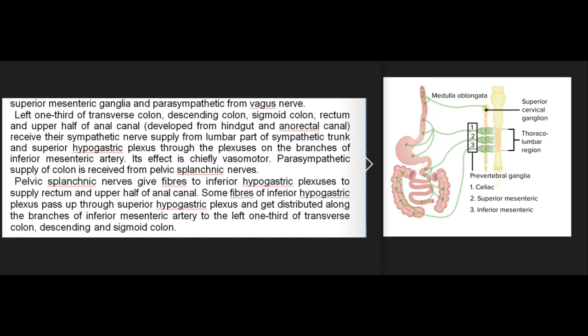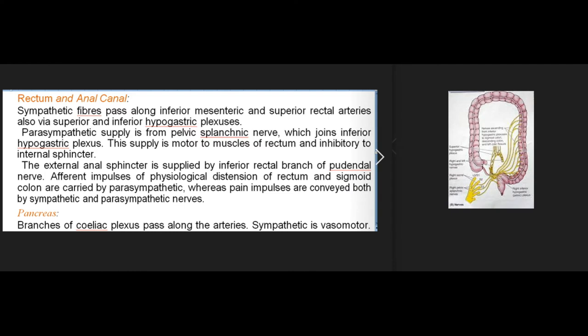Parasympathetic supply of the colon is received from pelvic splanchnic nerves. These give fibers to the inferior hypogastric plexuses to supply the rectum and upper half of the anal canal; some fibers pass up through the superior hypogastric plexus to be distributed along branches of the inferior mesenteric artery to the left one-third of the transverse colon, descending and sigmoid colon. Rectum and anal canal: sympathetic fibers pass along the inferior mesenteric and superior rectal arteries via superior and inferior hypogastric plexuses. Parasympathetic supply is from the pelvic splanchnic nerve joining the inferior hypogastric plexus — motor to muscles of rectum and inhibitory to internal sphincter. The external anal sphincter is supplied by the inferior rectal branch of the pudendal nerve. Afferent impulses of physiological distension of the rectum and sigmoid colon are carried by parasympathetic, whereas pain impulses are conveyed by both sympathetic and parasympathetic nerves.